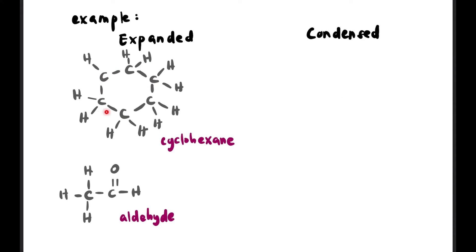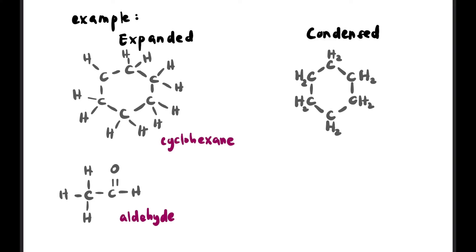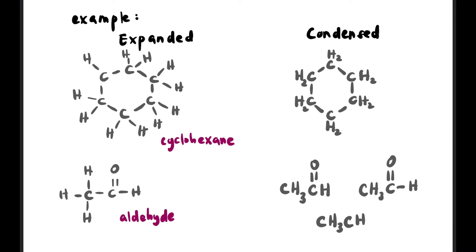For cyclic compounds — for example cyclohexane with 6 carbons — when transforming to condensed structure, the single bonds between C-C inside the ring must be shown. But C-H bonds outside the ring don't need to be shown. For an aldehyde structure with a C double bond O: we write CH3 at the end as usual, and the C=O double bond must be shown. You can also simplify it as CHO, where the O at the end implies a double bond. This simplification is only acceptable for C=O.